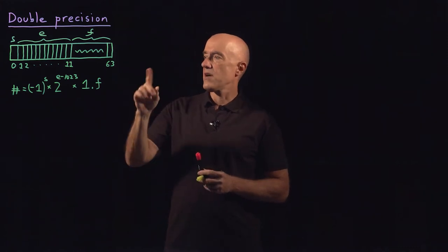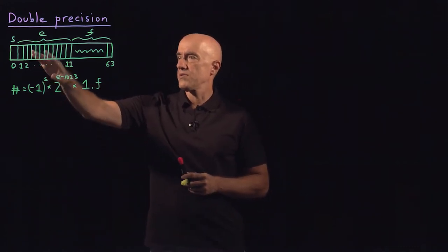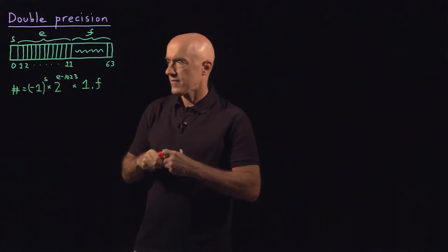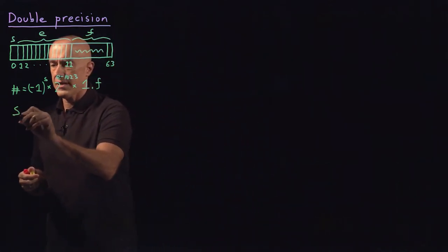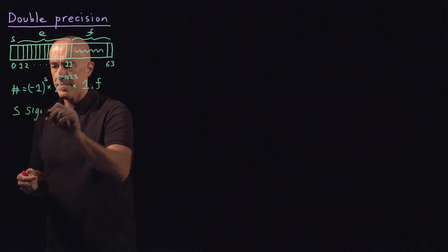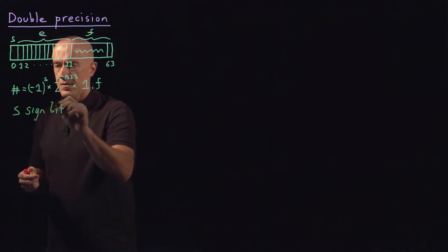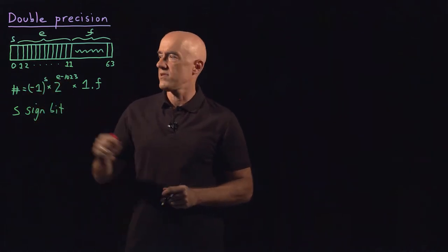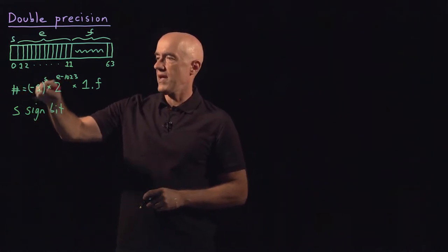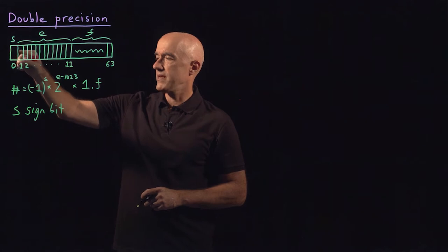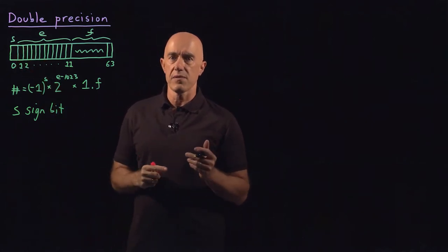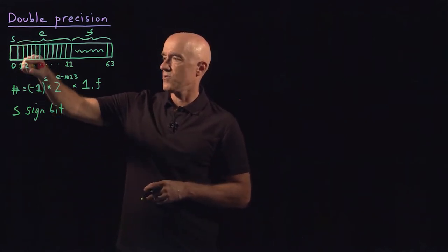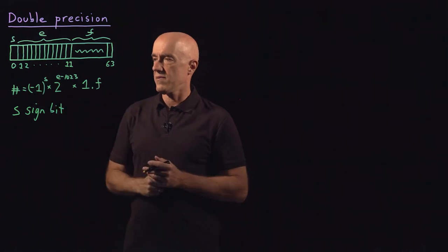And the number is represented split into three pieces. S is called the sign bit. So the first bit in the number determines the sign of the number, minus one to the S. If the first bit is a zero, it's a positive number. If the first bit is a one, it's a negative number.